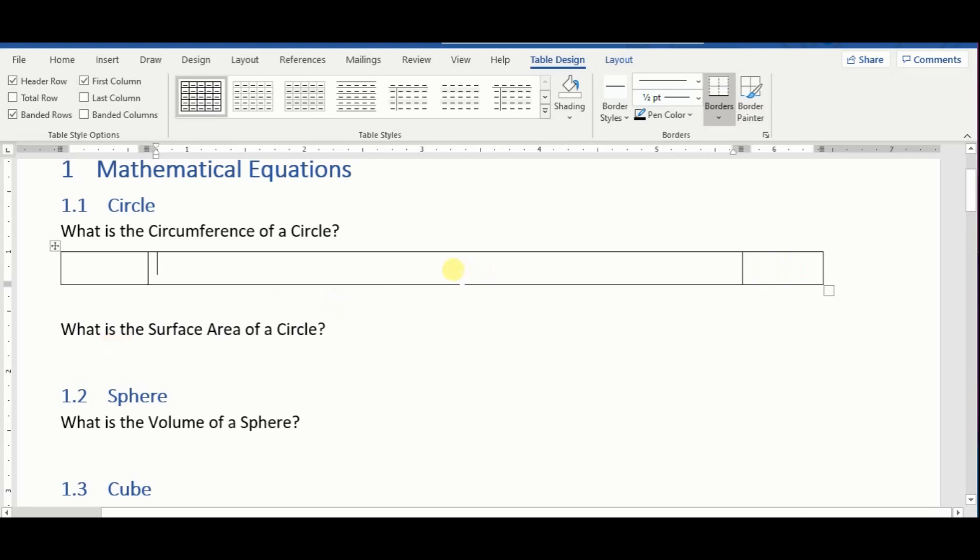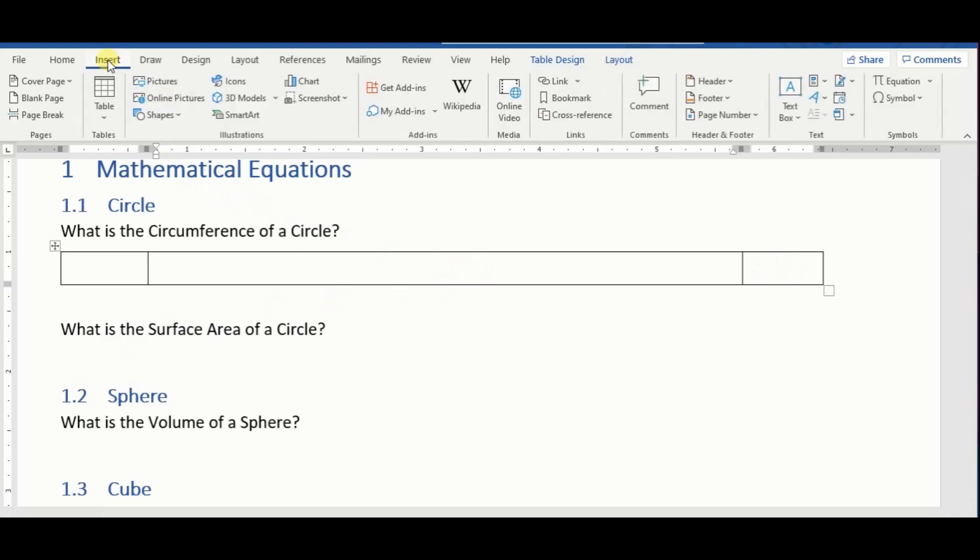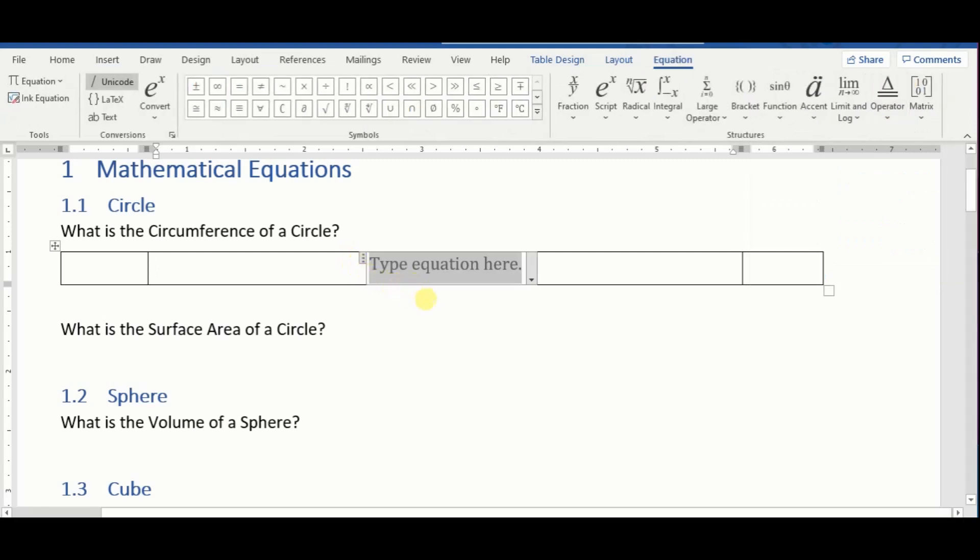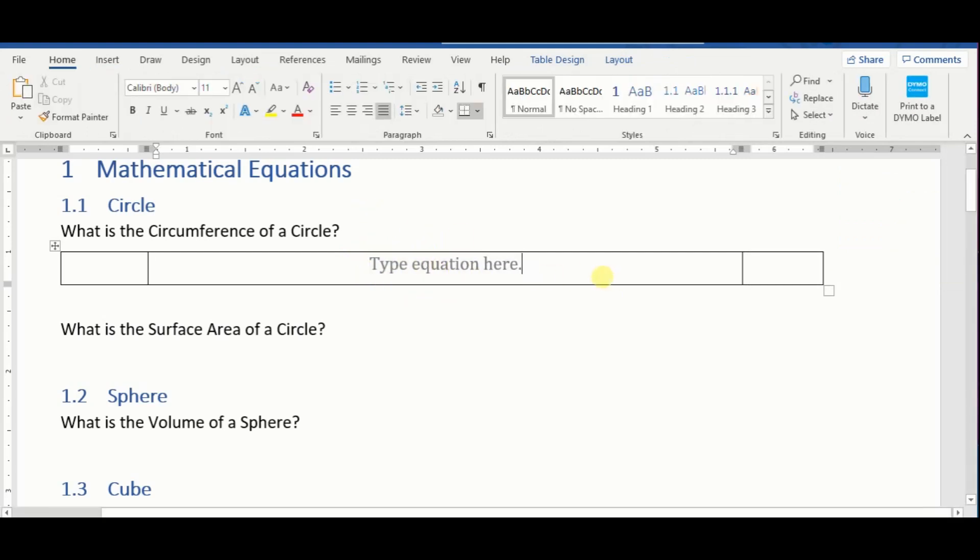So let's click on the second cell here, and then go to insert, and then click on equation right here. Now it creates a field where you can enter your equation. We can do this later. Now what we're doing here is we're creating a template that we're gonna use for the rest of this document.